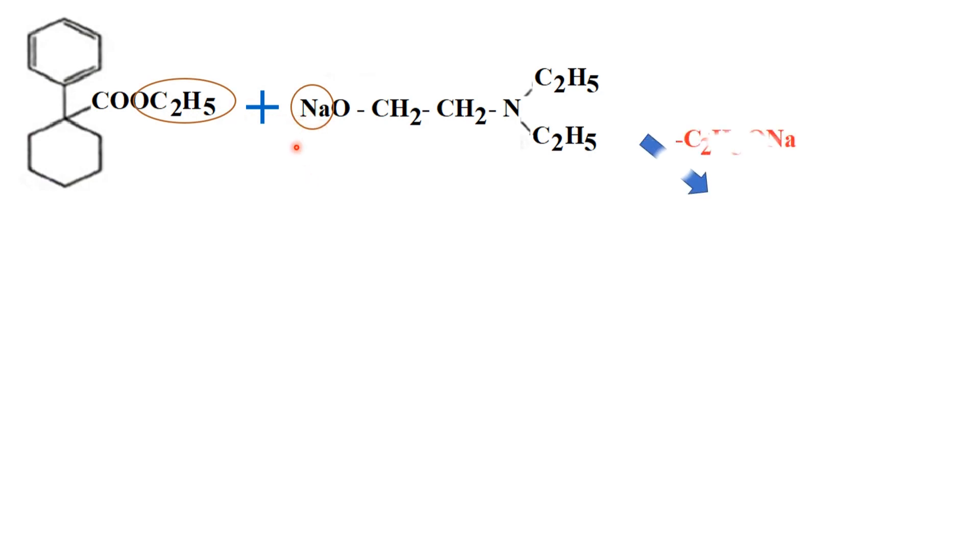Now, we have taken the ethyl ester and with that ethyl ester is treated with the sodium salt of diethyl amino ethanol. Sodium salt of diethyl amino ethanol. By the addition of these two what happens? Here that ethoxide group and this Na would be removed as sodium ethoxide. That is why the left group other than sodium, the left would be added with the CO and we are getting this intermediate compound.